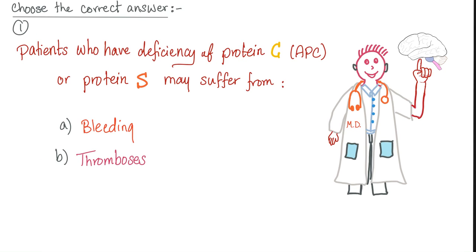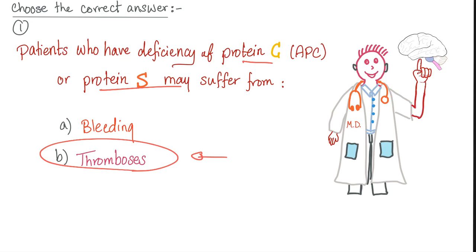Three questions to stimulate your brain. Question one: patients who have deficiency of protein C or protein S may suffer from — bleeding or thrombosis? The answer is thrombosis. They are missing the brakes, therefore they have nothing but accelerators accelerating the process of thrombosis.